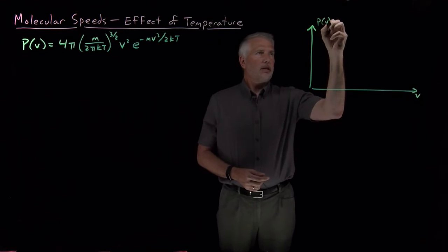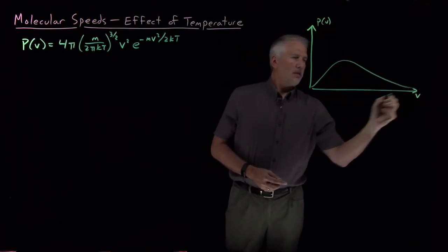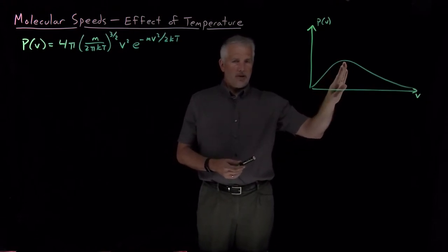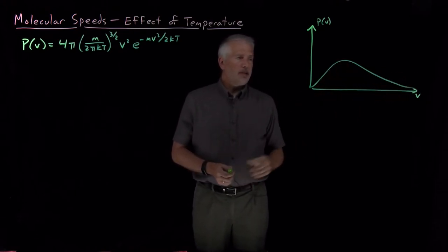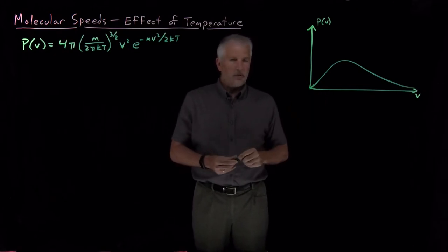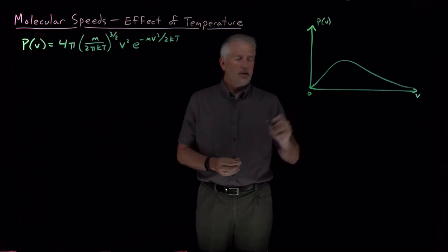We know roughly what that distribution looks like. If I were to plot that probability distribution, it's somewhat asymmetrical with a longer tail on the high-speed side than the low-speed side, mainly because that distribution needs to reach zero by the time we have zero velocity.